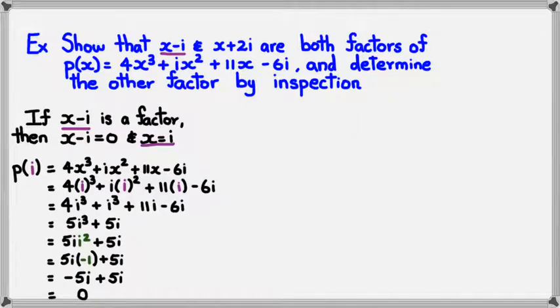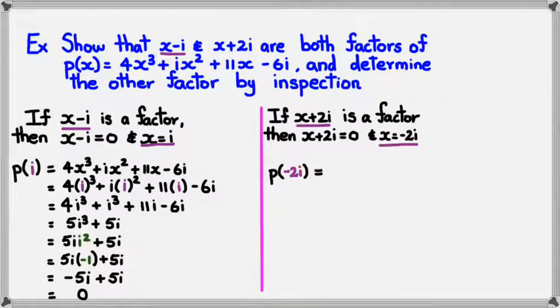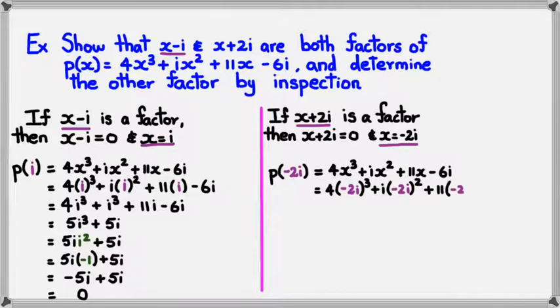So now looking at x plus 2i. We know that if x plus 2i is a factor, then x plus 2i equals 0, and x is equal to minus 2i. So I need to figure out p of negative 2i, and if it equals 0, then it's a factor. So I'm going to try that, p of negative 2i. At this point, again, it's the same drill. Write the equation, and then substitute wherever x is with negative 2i.